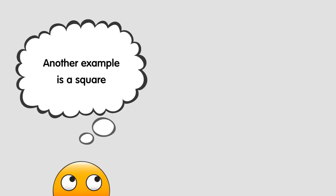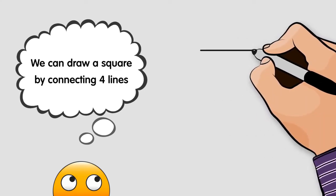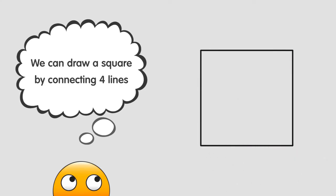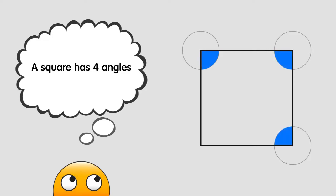Another example is a square. We can draw a square by connecting four lines. A square has four angles. One, two, three, and four.